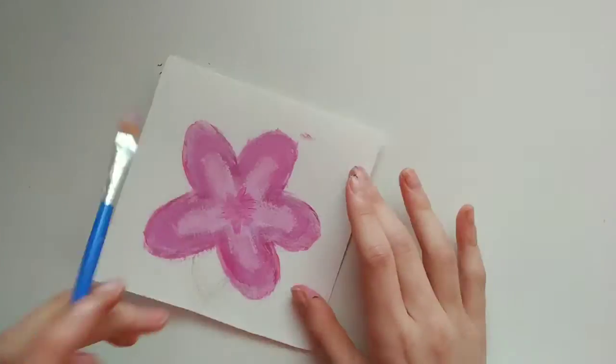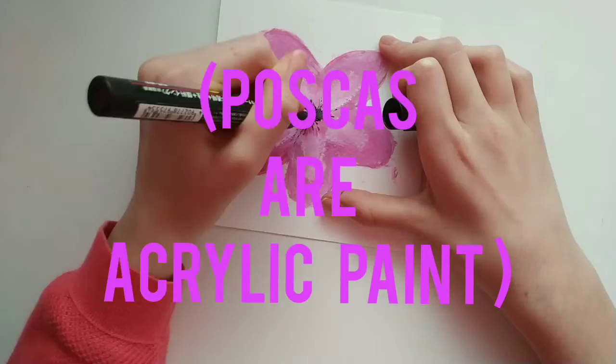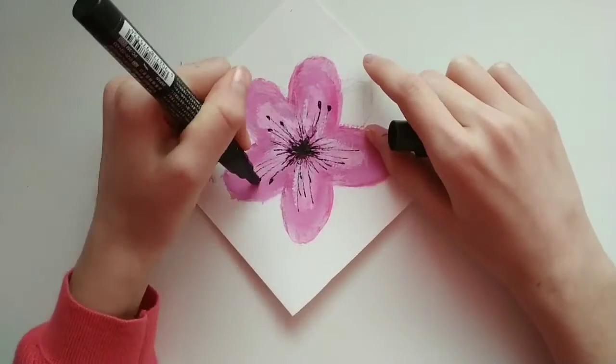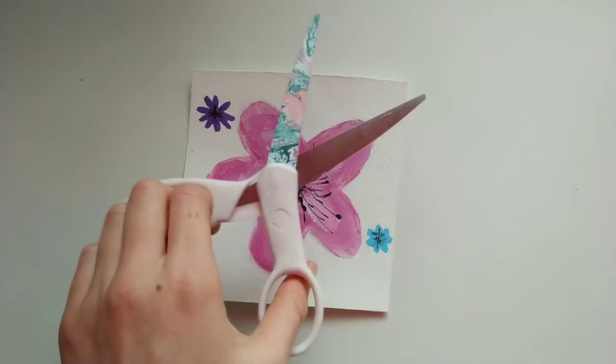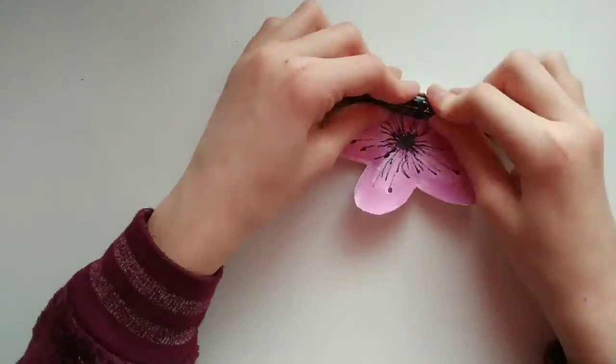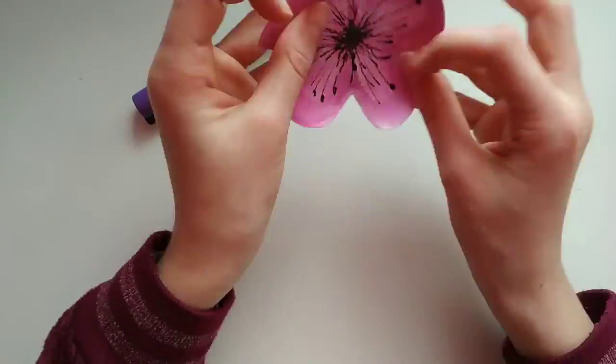After that, I went in with a Posca pen and drew the middle. And I also just drew some little flowers, but I didn't like those, so I just cut out the flower. And then I curled the petals to make them prettier.